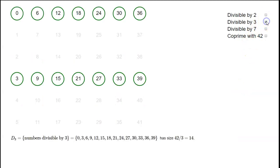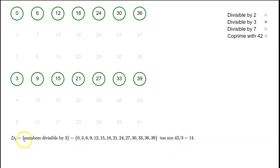Similarly, if we want to look at the numbers that are divisible by 3, we can list the numbers 0 up to 41 in order — every third one is divisible by 3. So the number of numbers divisible by 3 is just going to be 42 over 3, which is 14. We'll write D3 for the set of numbers that are divisible by 3.